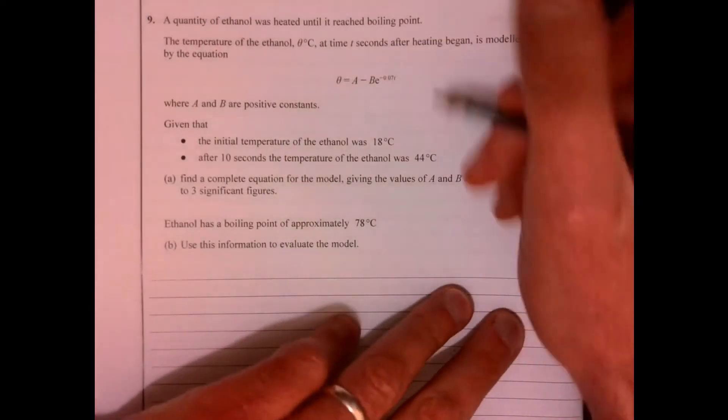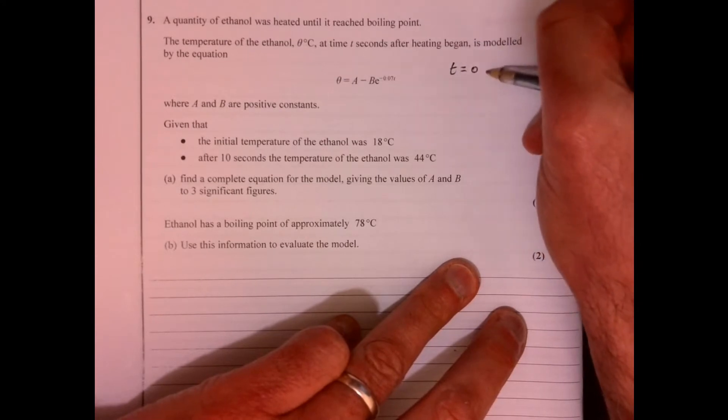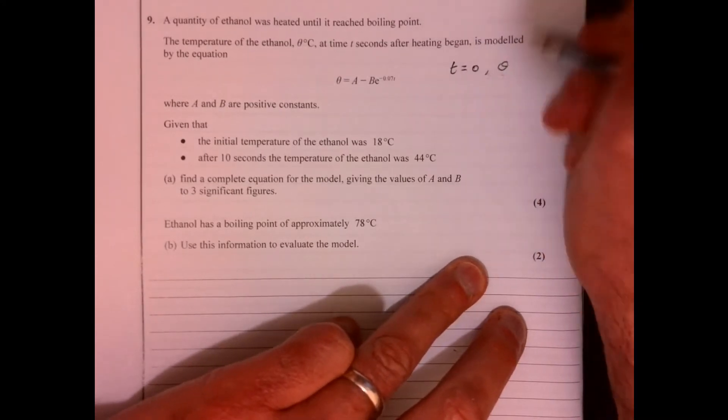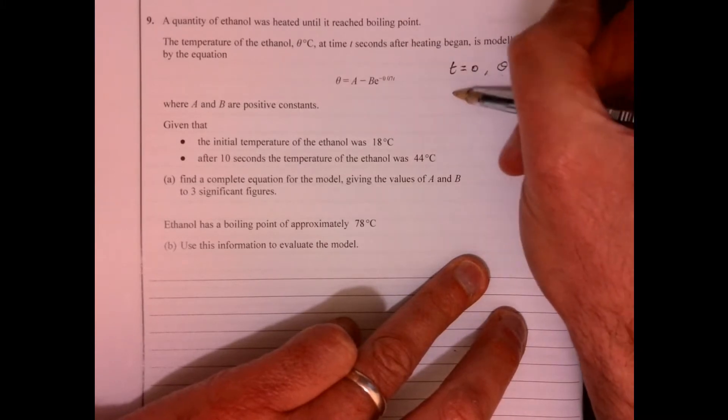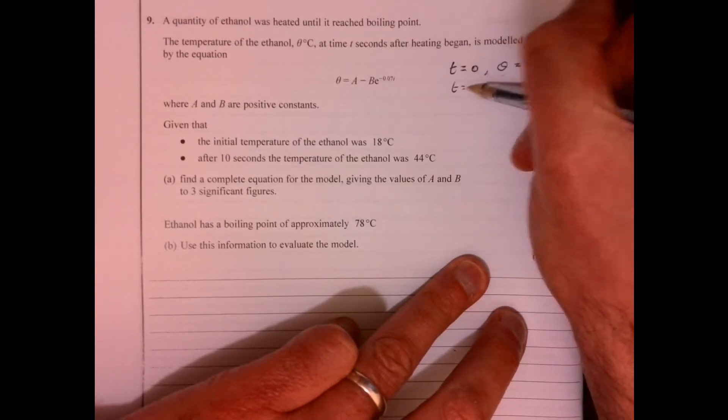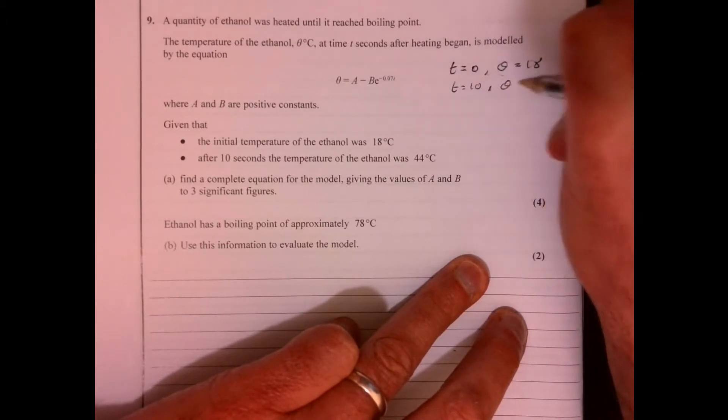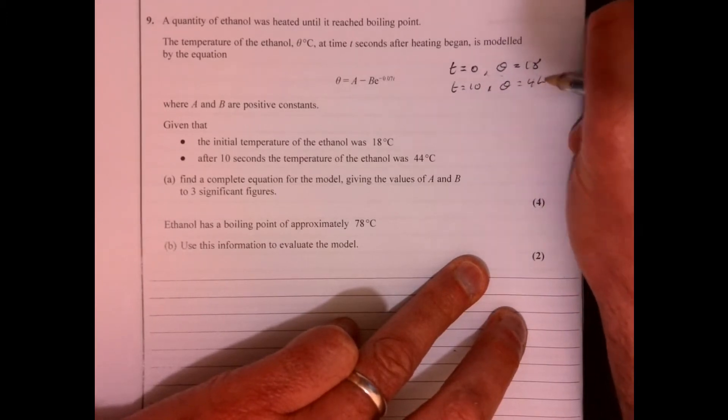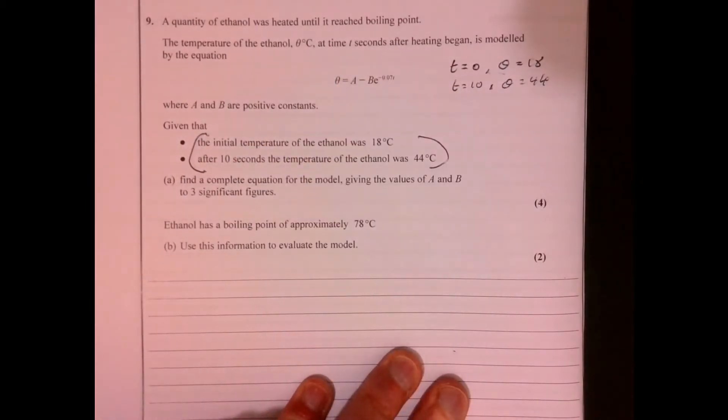So question nine. Let's just jot down what else we know. We know that when T is equal to zero, the temperature is 18. And we also know that when T is equal to 10, the temperature is going to be 44. So that's that information just there.